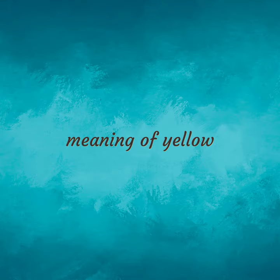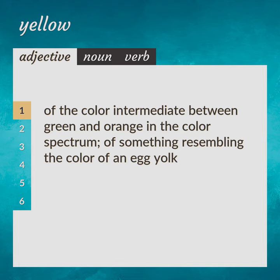Meaning of yellow. Of the color intermediate between green and orange in the color spectrum. Of something resembling the color of an egg yolk.